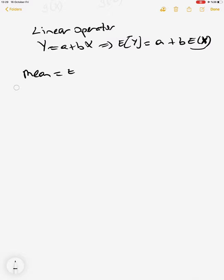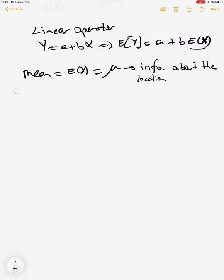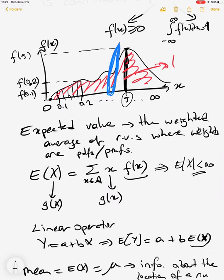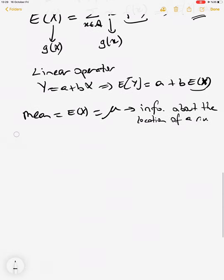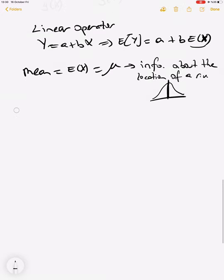The mean is the expected value, denoted mu. It gives us information about the location of a random variable — where most of the observations are located. For example, if the distribution is symmetric, most observations accumulate at the center, and that center is the location of the random variable.